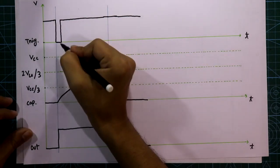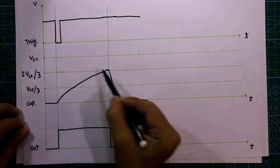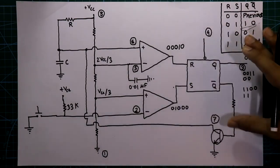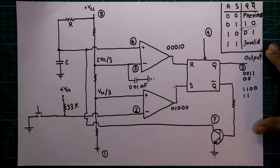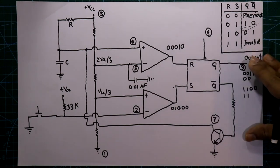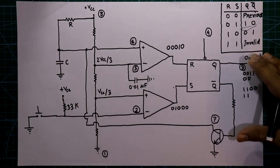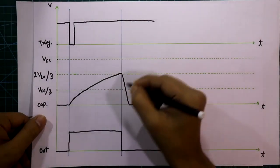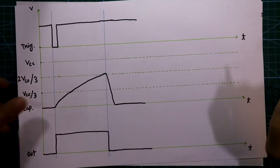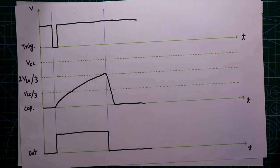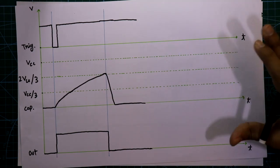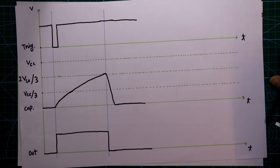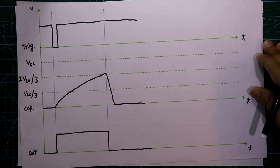If we apply another trigger signal, the entire cycle repeats. This completes the theoretical explanation of the monostable mode of IC555. In the next video, I will show you the practical circuit and verify these waveforms on an oscilloscope. If you liked this video, please like, share, and subscribe, and leave any doubts in the comment section. Thanks for watching.